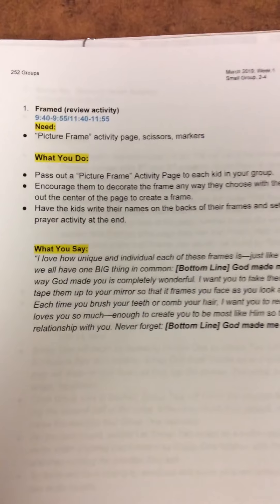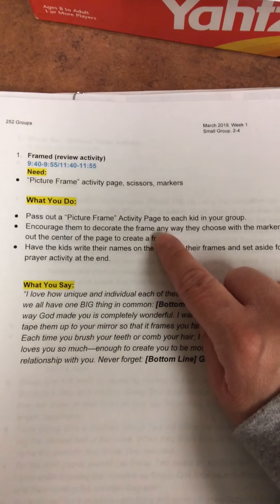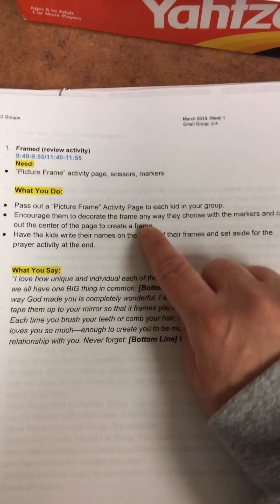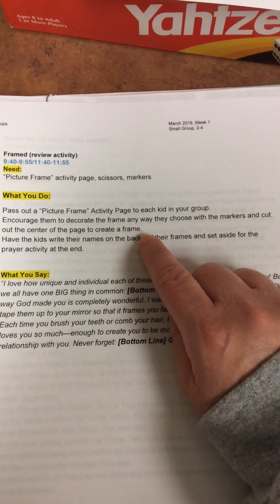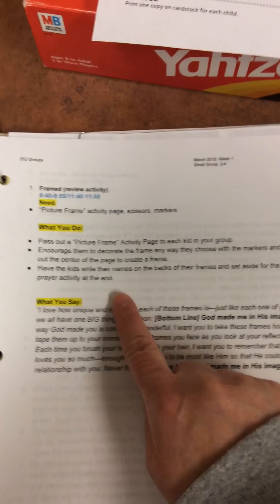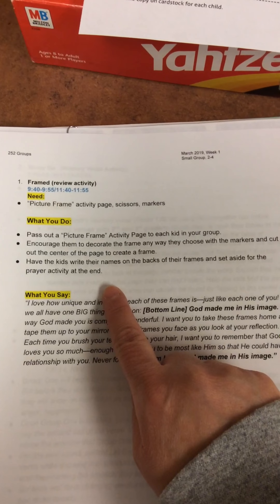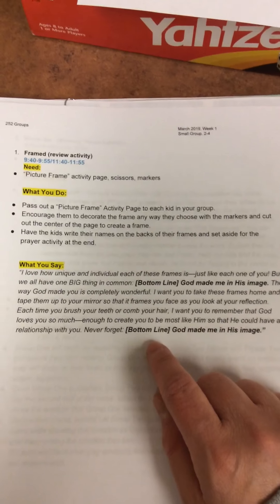When we get back from large group for our review activity, you are going to need this activity page that looks like a little picture frame, along with some scissors and markers. Pass out the picture frame to each kid and encourage them to decorate it any way they want with markers. Then they're going to cut out the middle of the frame. Have kids write their name on the back of their frame and set it to the side for the prayer later.